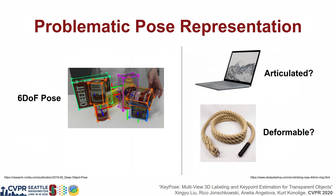Also, 6DoF pose assumes a rigid body. How do we represent the pose of articulated or deformable objects?